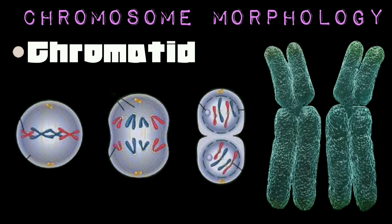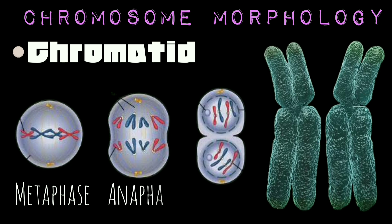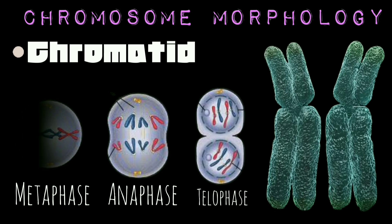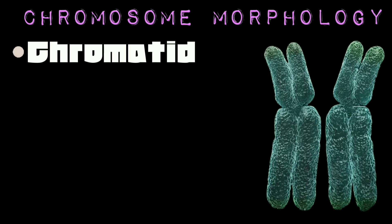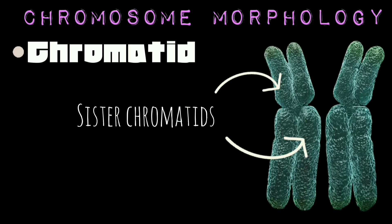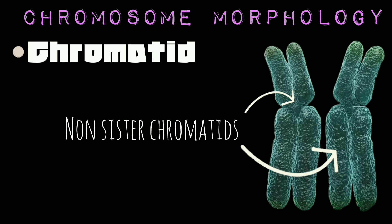The DNA present in each chromosome replicates during the synthesis phase of interphase to produce an identical copy of itself, so that during prophase and metaphase, each chromosome is made up of two chromatids. Since the two chromatids making up a chromosome are produced through replication of a single chromatid, they are referred to as sister chromatids. In contrast, the chromatids of homologous chromosomes are known as non-sister chromatids.